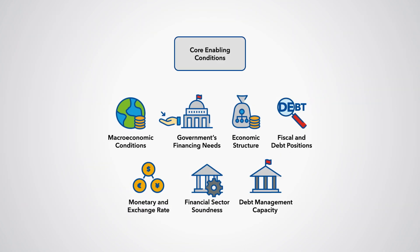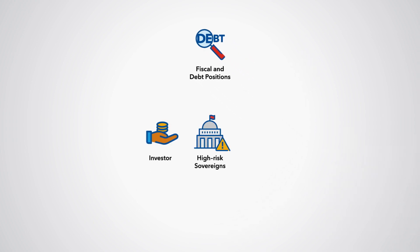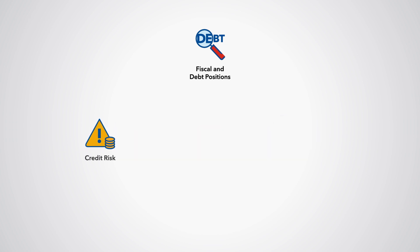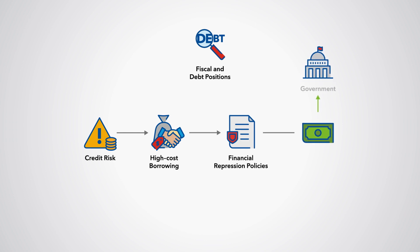Next, let's explore sound fiscal and debt position of a country as a factor that supports the primary market. Investor aversion from sovereigns with unsustainable fiscal position and high risk of debt distress could impact the demand for government securities. A high degree of credit risk would also raise the cost of borrowings, raising the temptation for the government to rely on financial repression through policies that might direct funds towards government that would otherwise go to other investments.